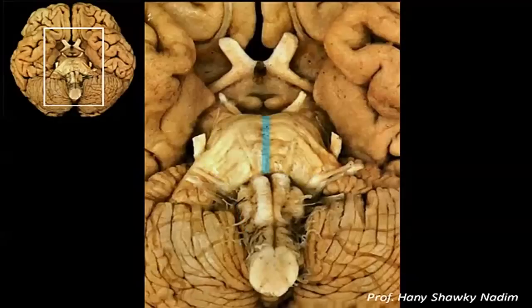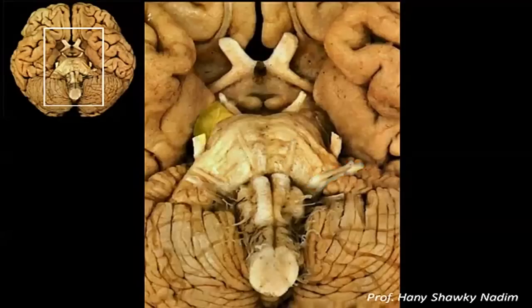The groove for the basilar artery, the trigeminal nerve, this is the abducent nerve, the facial and vestibulocochlear nerves, the cerebral peduncle of the midbrain, the oculomotor nerve, and the trochlear nerve.